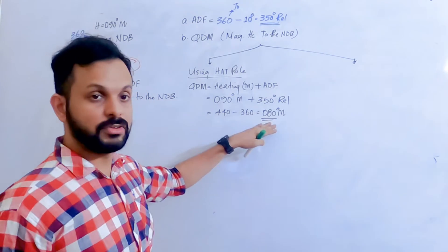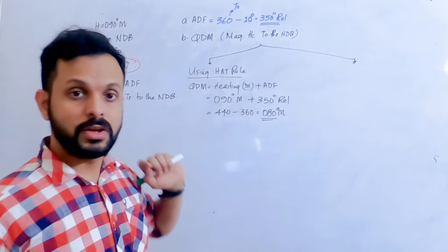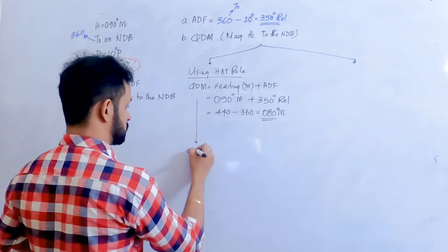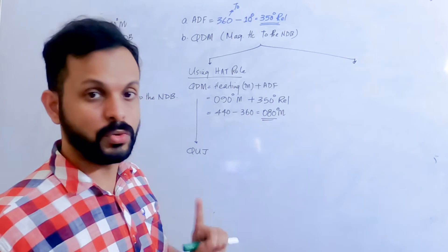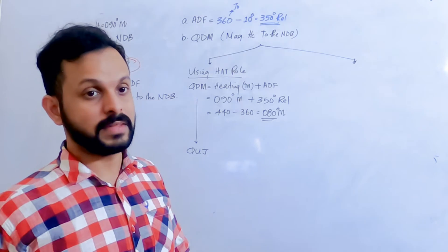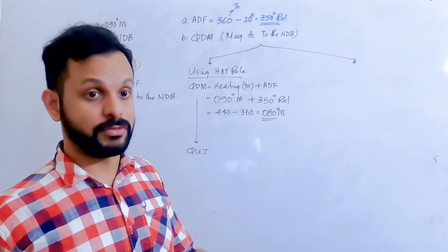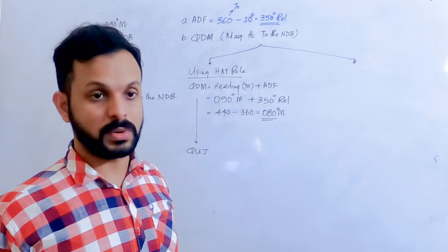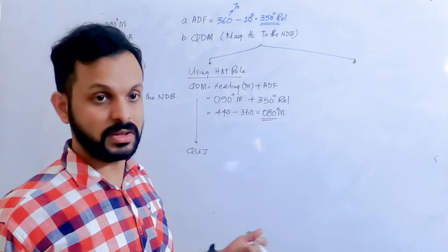Do we need variation to find QDM? No. But we might require variation to find QUJ from this. To find QUJ, you have to apply variation to QDM. But the problem is, to apply that we need the variation at the aircraft, not at the NDB, which is not specifically mentioned in this question. Neither has the question asked you to find QUJ, so it's not necessary here.